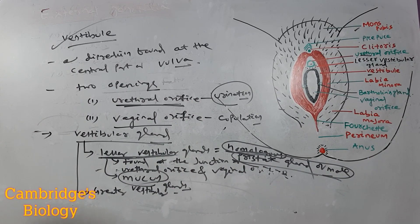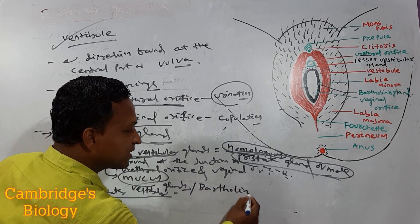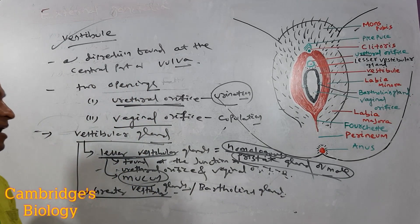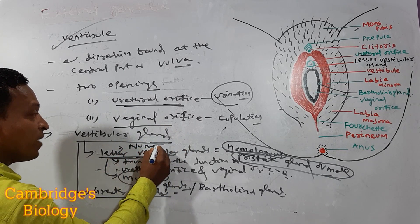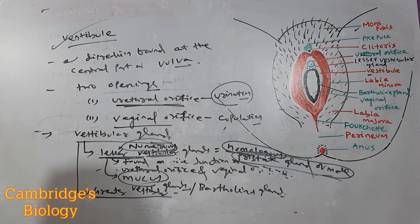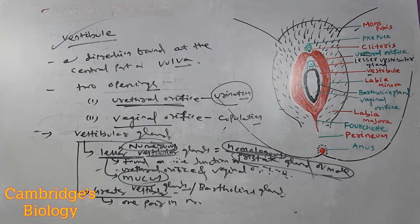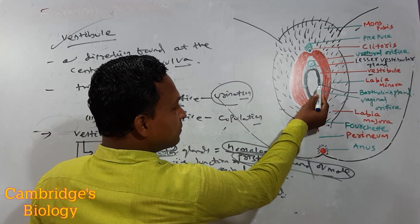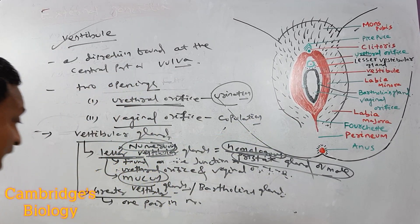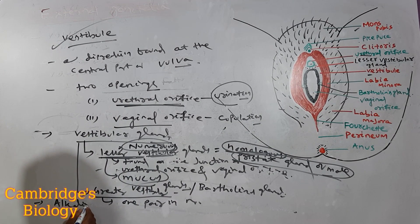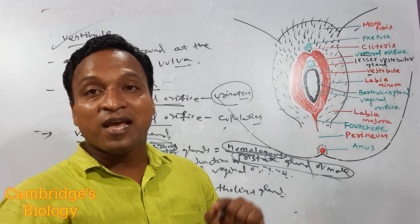If we talk about the greater vestibular glands, these are otherwise called Bartholin's glands. The lesser vestibular glands are numerous in number, but the greater vestibular glands are one pair in number. They open to the vaginal orifice, and they secrete alkaline fluid which neutralizes the acidity of semen.